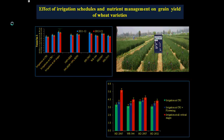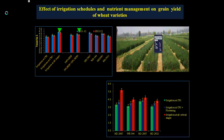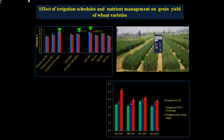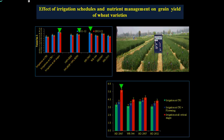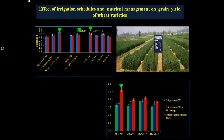The experiment was nicely designed. It was found that applying irrigation at all critical stages gave the best results. Among nutrient management treatments, applying 50% RDF and 50% RDN gave very good yield. Among varieties, SD 2967 gave the highest yield in both years, followed by SD 2987.